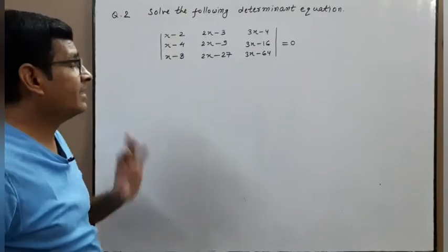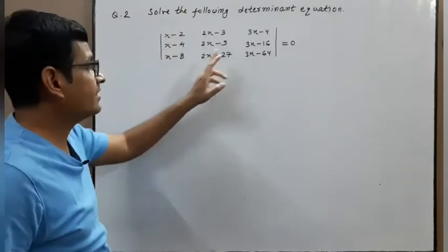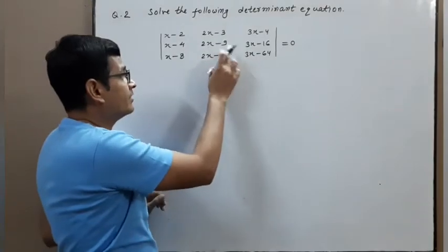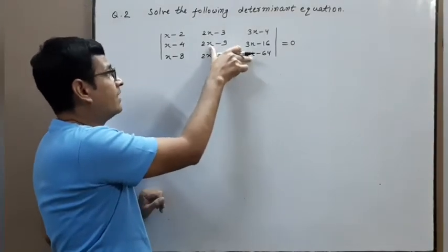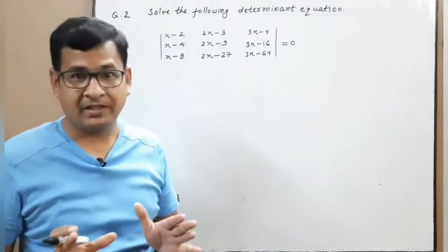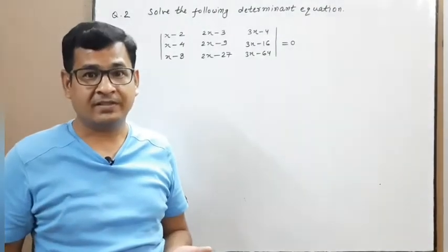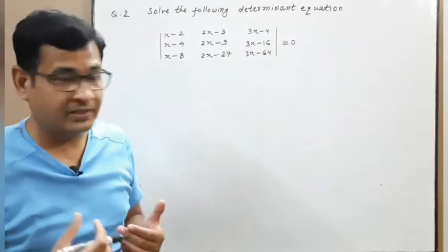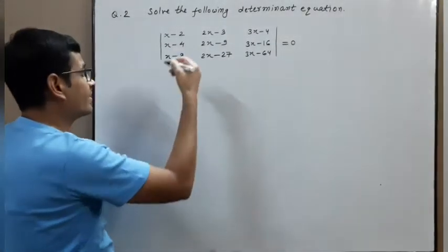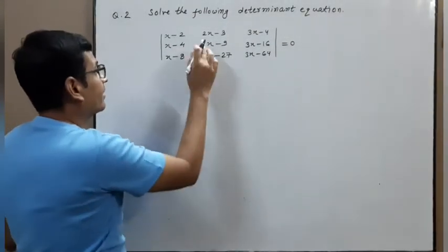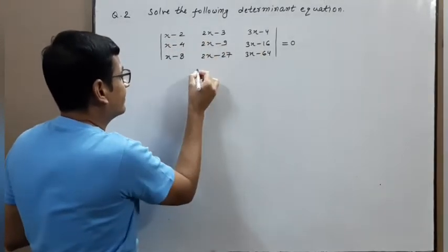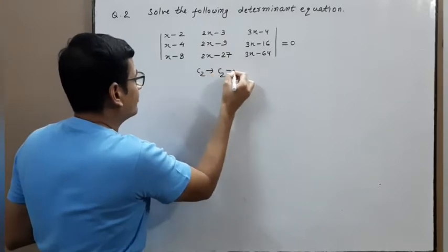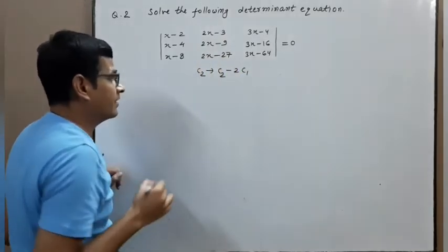Next problem: solve the following determinant equation set equal to 0. If we simply expand, we get x² times x, giving a cubic polynomial. Finding factors of a cubic polynomial is a bit tricky, so a better option is to simplify first. Notice: x, 2x, 3x — so change C2 → C2 − 2·C1.